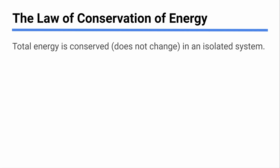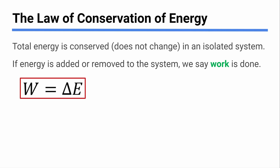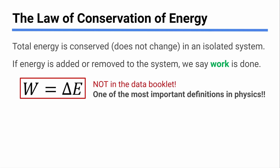Sometimes energy is added to or taken away from a system — for example by friction. The way we handle this is with work. Work is one of the most important concepts in IB physics. If you add energy to a system or take energy away, we say you do work. Work is the change in energy — this is one of the most foundational equations in all of physics, and it is not in the data booklet because you are just expected to know it.